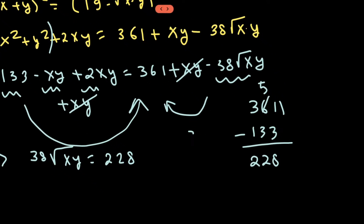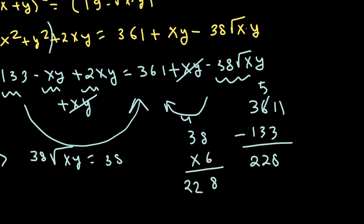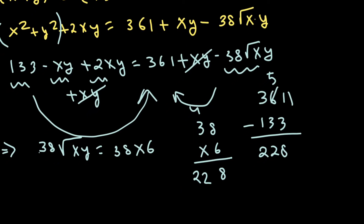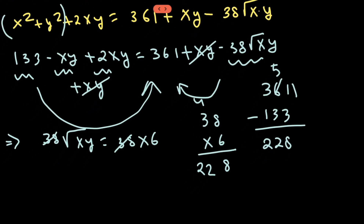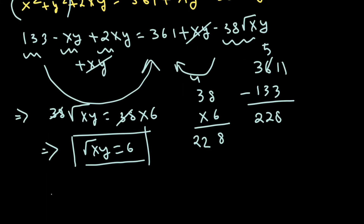Now, 38 × 6 = 228, since 6 × 8 = 48 and 6 × 3 = 18 plus carry gives 22, confirming 228 = 38 × 6. So 38 cancels from both sides, giving √(xy) = 6. Squaring both sides, we get xy = 36.